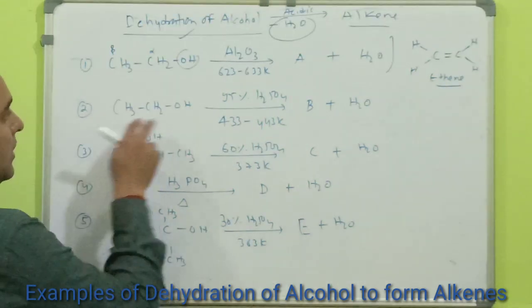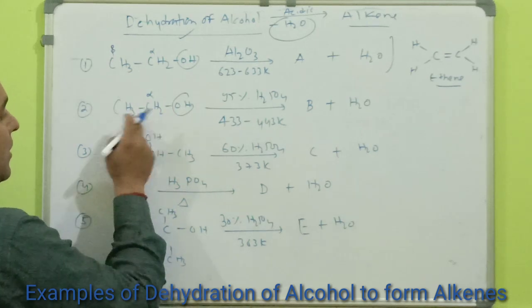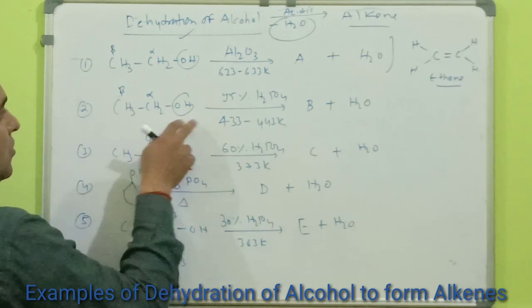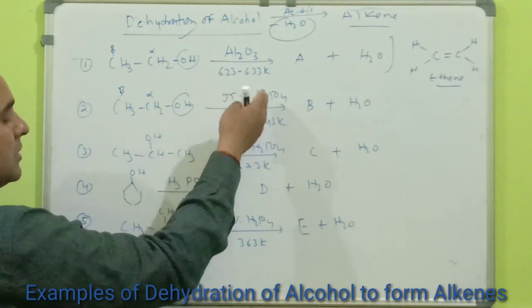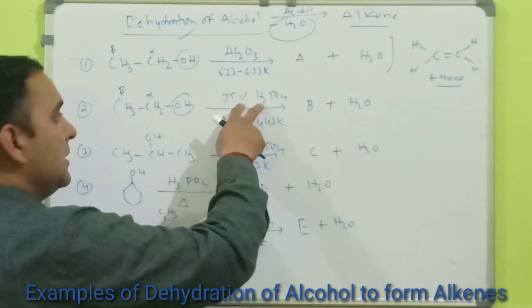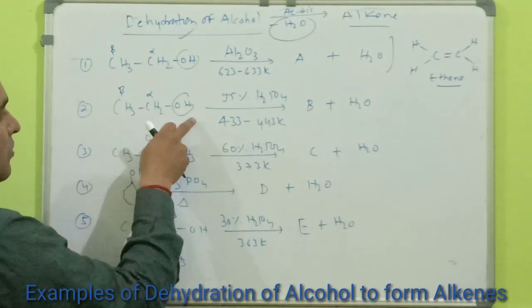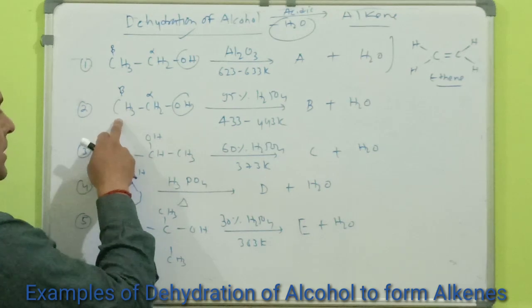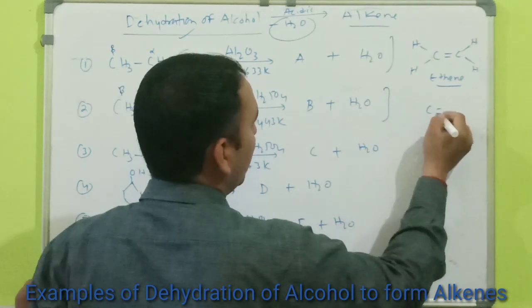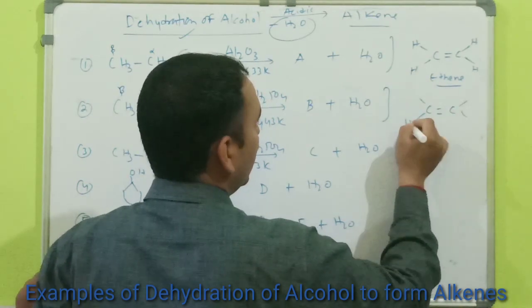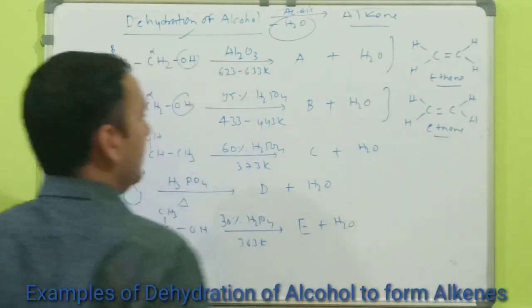In the second reaction, the OH group is attached to the alpha carbon, and next to it is the beta carbon. Again, dehydration takes place because both temperature and acid are present. The OH group is removed from the alpha carbon and hydrogen from the beta carbon, so alkene formation takes place — the product is again ethene.